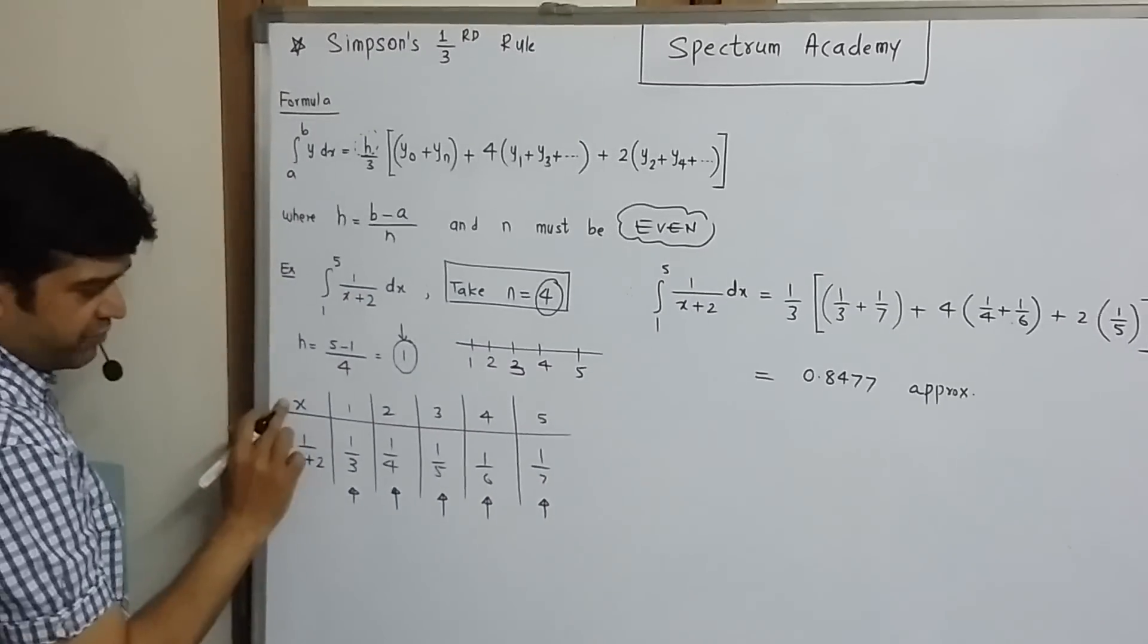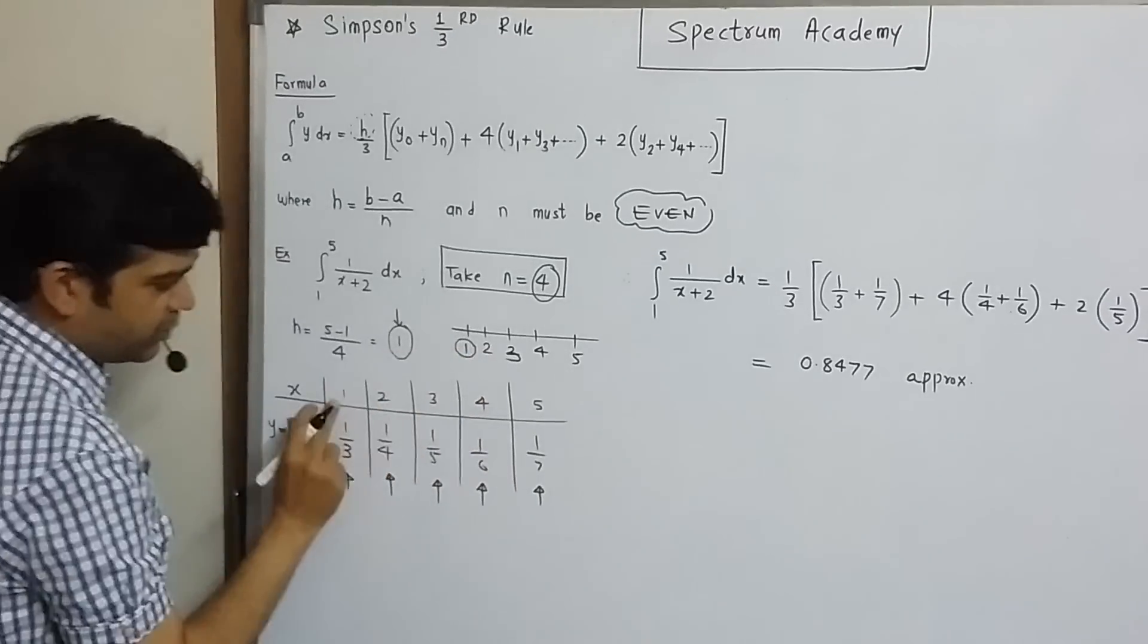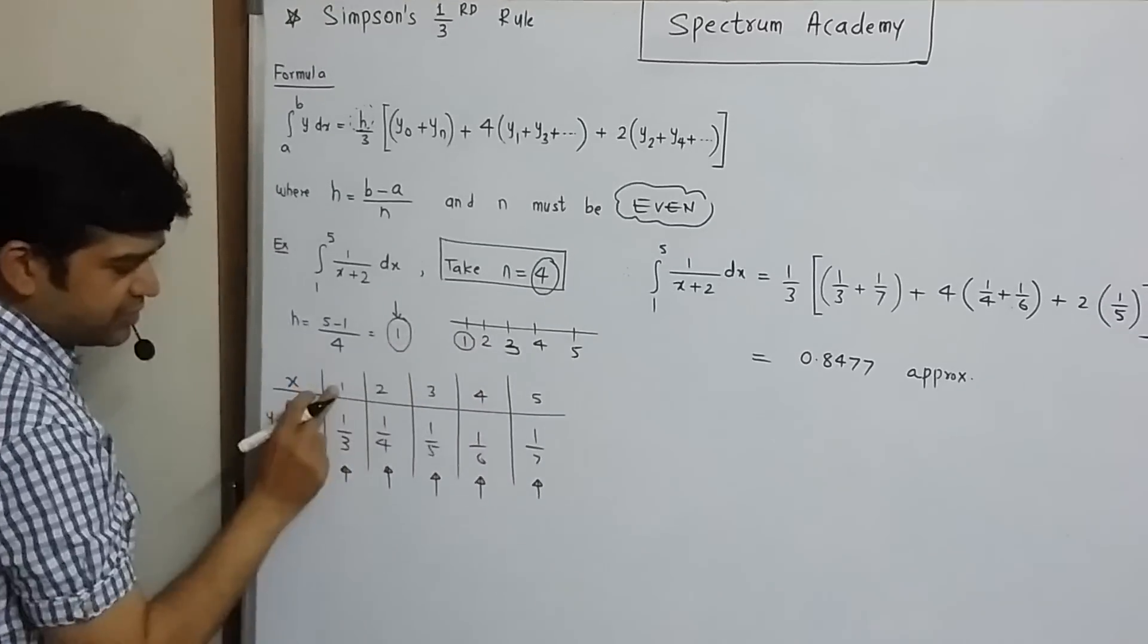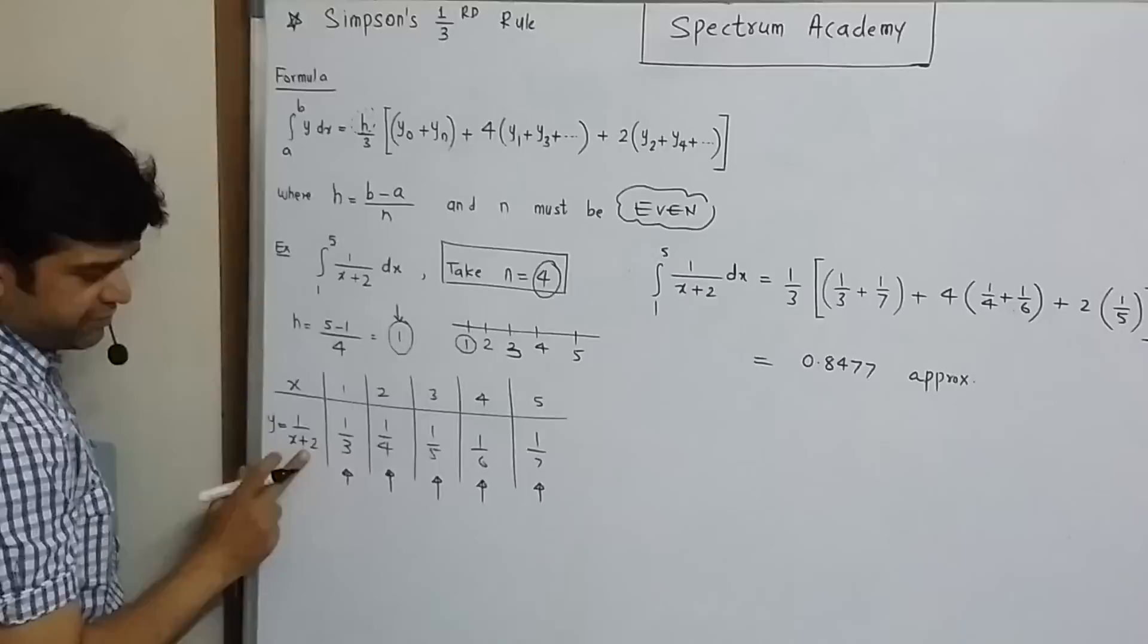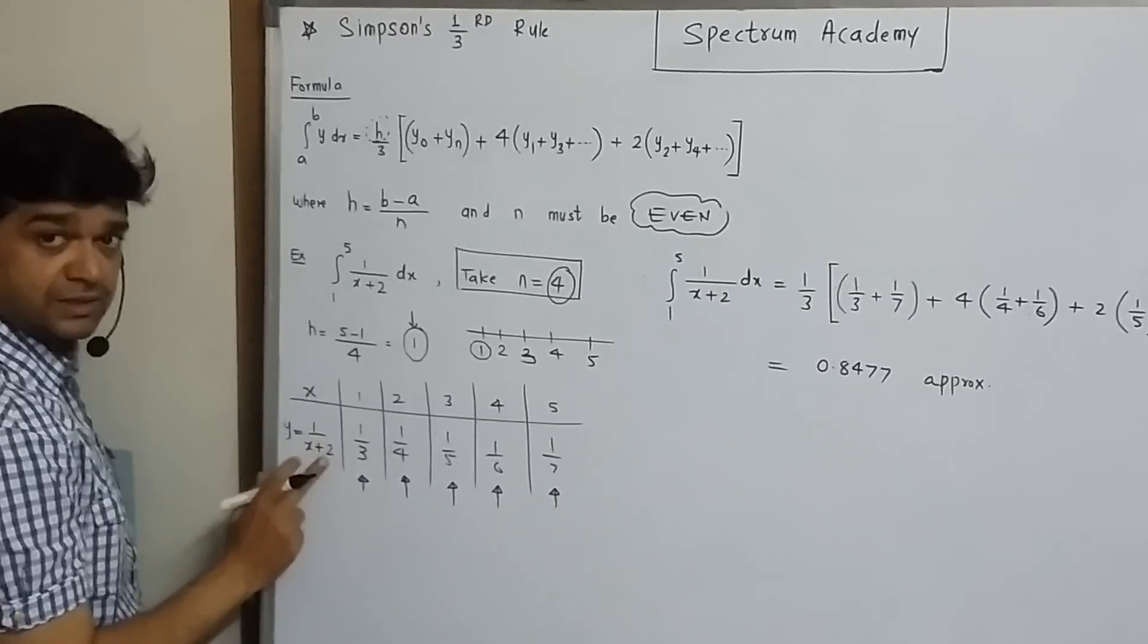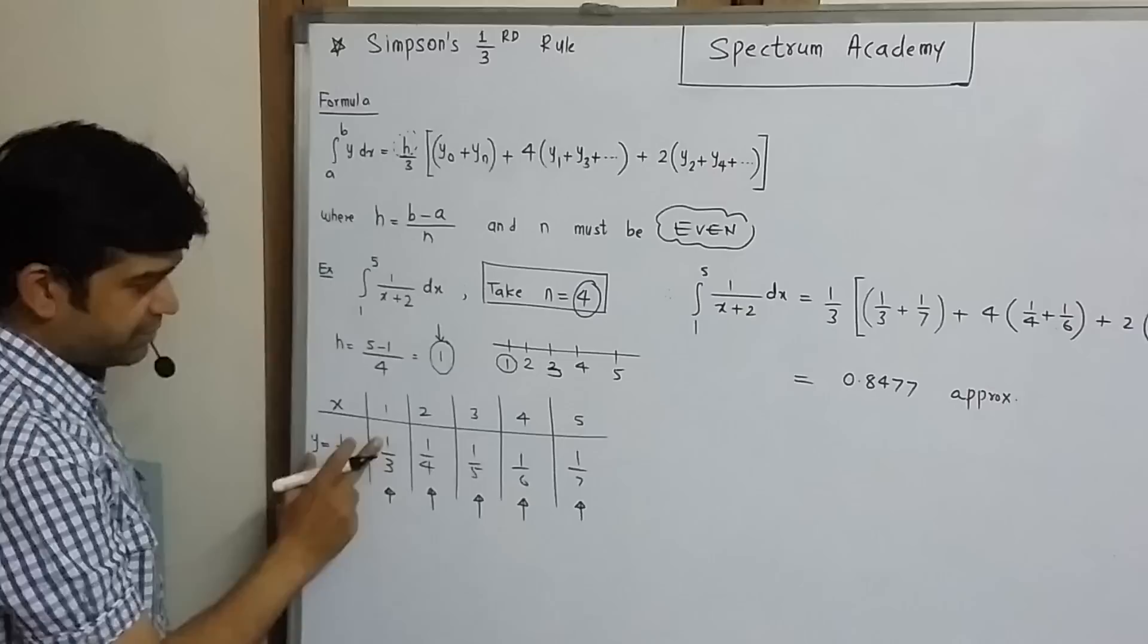Let's make this table. Value of x. First, consider 1. If x value is 1, what is y? y is 1 upon x plus 2. So, y value will be 1 upon 1 plus 2. That is 1 by 3.